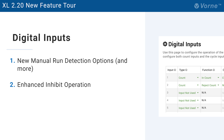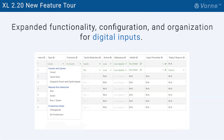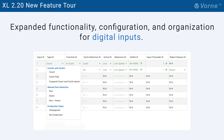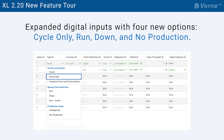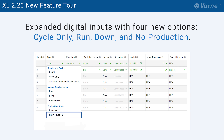Let's get technical with two brand new features related to digital inputs. First, we've expanded what you can do with digital inputs and made them easier than ever to configure. We've organized your options into three groups: counts and cycles, manual run detection, and production state. And we've added four new options: cycle only, run, down, and no production.